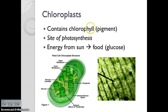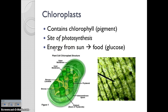Next up we have the chloroplast. This contains a green pigment called chlorophyll, and this is where photosynthesis takes place — it's the site of photosynthesis. Write this down: the purpose of photosynthesis is to take energy from the sun and use it to make food for the plant, which is glucose — sugar. You're going to hear me refer to that over and over. Chloroplasts are found in plant cells.